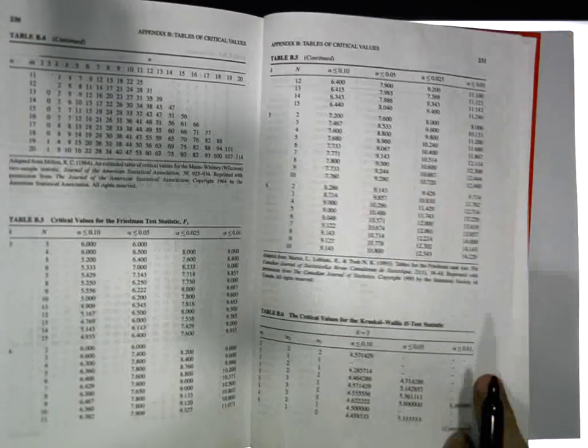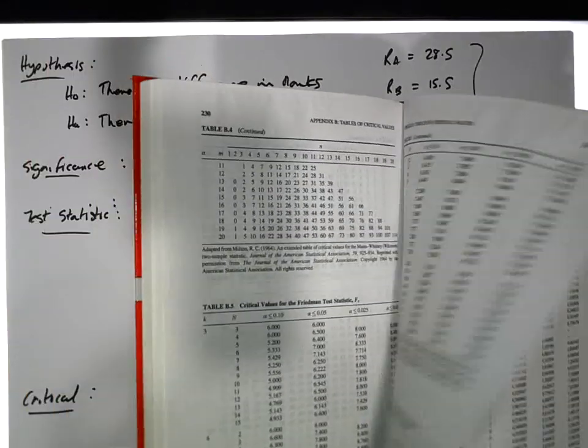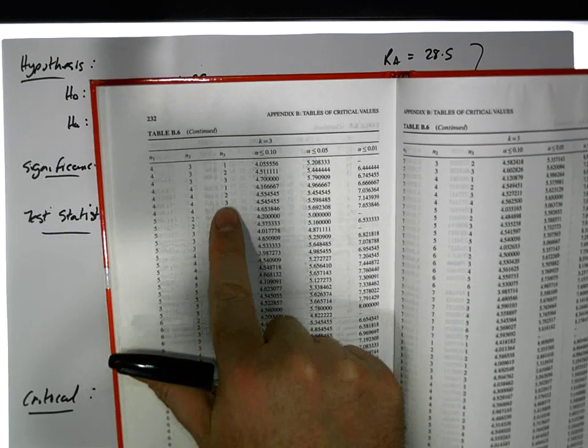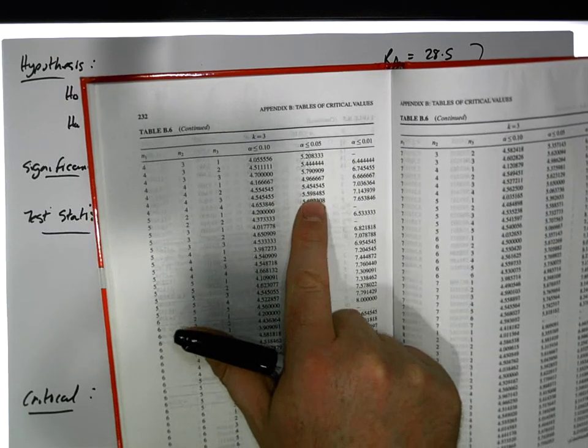In our case here the samples are 4, 4, and 3. So we have 4, 4, and 3, and the significance level is alpha equals 0.05.